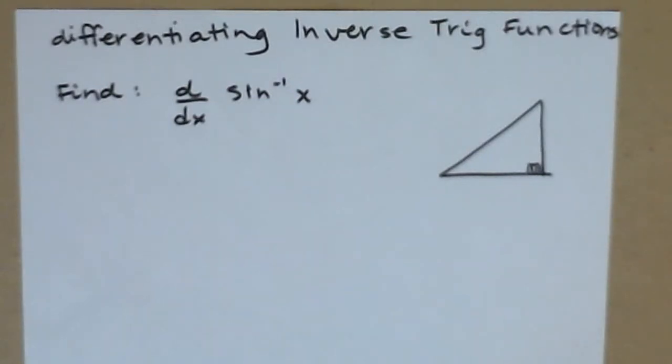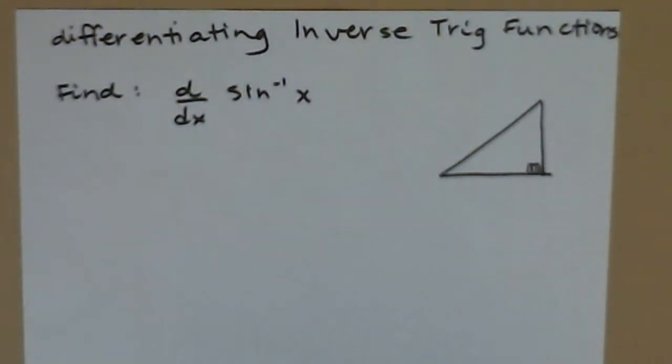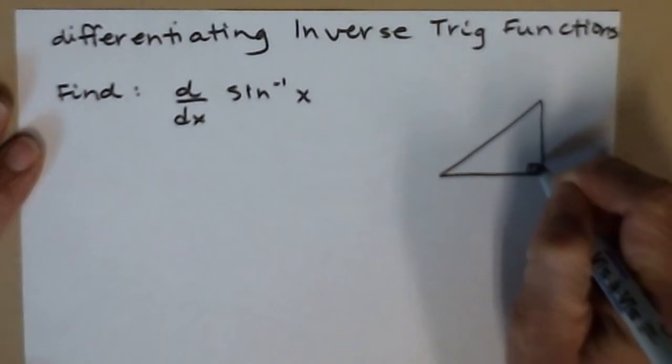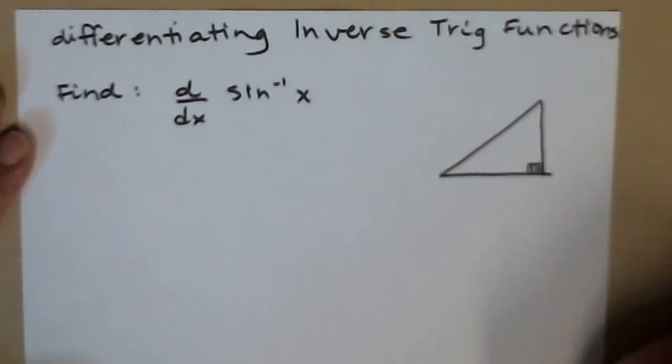Let's review how we find the derivative of an inverse trig function. We're going to start with an inverse sine and try to differentiate with respect to x. Whenever we're doing this, it's helpful to have a triangle to put all of our pieces on.